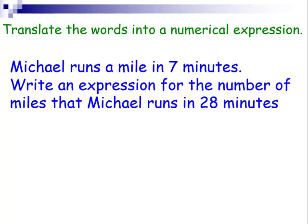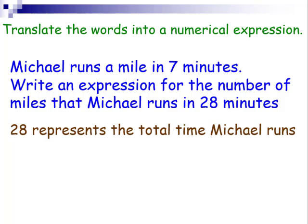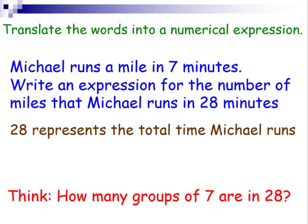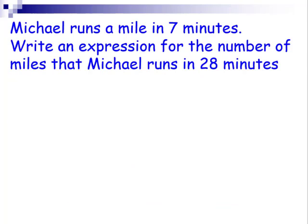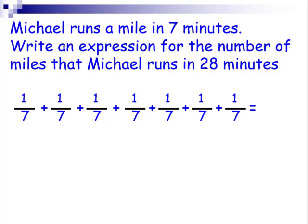Michael runs a mile in seven minutes. Write an expression for the number of miles that Michael runs in 28 minutes. 28 represents the total time Michael runs. You want to think of how many groups of seven are in 28. So therefore, we're going to divide. So 28 divided by seven. If he's taking seven minutes to run one mile, that means every minute he's running one-seventh of a mile until he gets to seven-sevenths, which is one mile. 28 divided by seven.